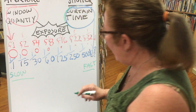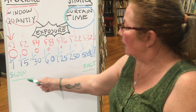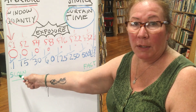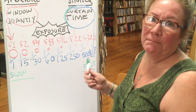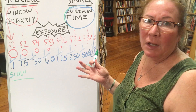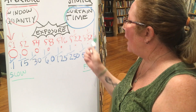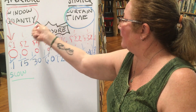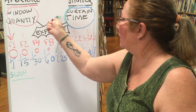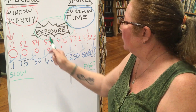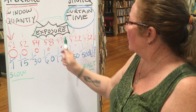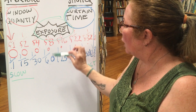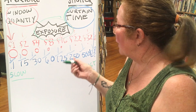All that means is the shutter — the curtain — opens slowly or it opens really quickly. That's it. It's pretty simple, and that's how these two work together to create an exposure. The exposure is created by the aperture and the shutter working together.